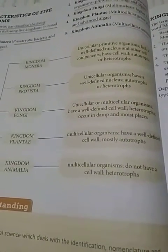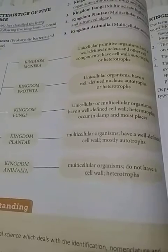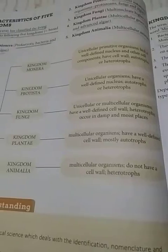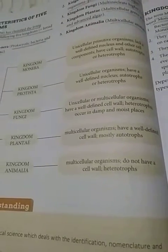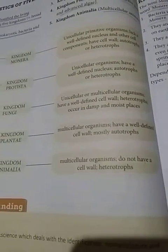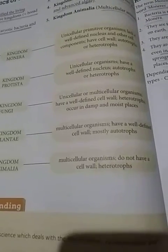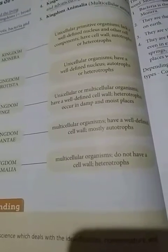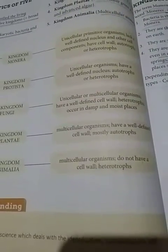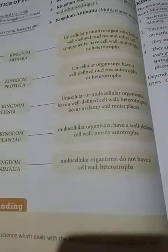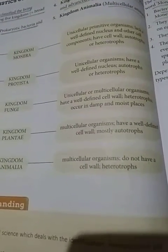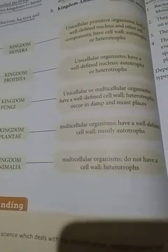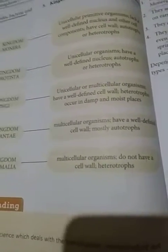Animals are multicellular organisms made up of more than one cell, and they cannot prepare their own food - they depend upon plants and other plant products for their food. Plants, which you can see all around you, are able to prepare their own food. They don't depend on others for getting food. So plants are autotrophs, meaning they prepare their food on their own, and they belong to Kingdom Plantae.